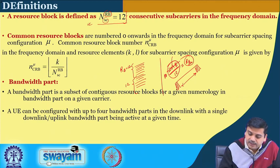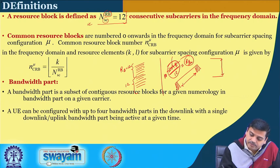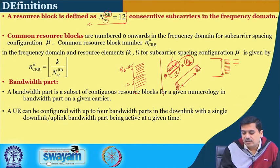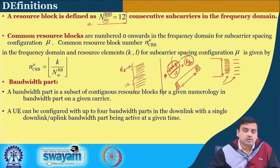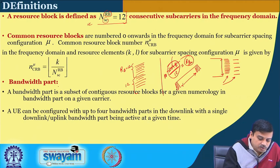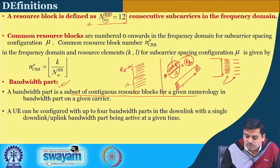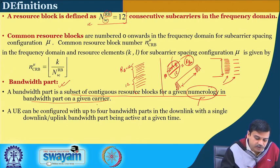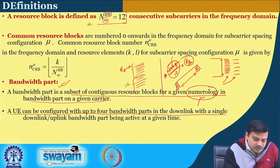As we have said, in a particular bandwidth one can have narrow subcarriers or wider subcarriers. Accordingly, depending on the value of mu, the number of resource blocks is going to change. There is also a definition of bandwidth part: a bandwidth part is a subset of contiguous resource blocks for a given numerology on a given carrier.